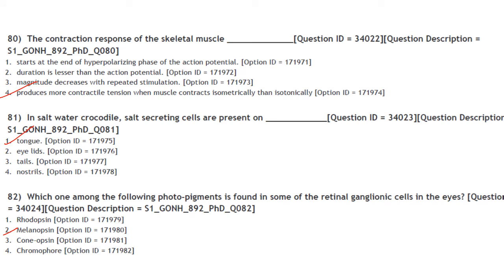Skeletal muscle produces more contractile tension when contracting isometrically than isotonically. In saltwater crocodiles, salt-secreting cells are present on the tongue. Answer is option 1. Which photopigment is found in some retinal ganglion cells? It is melanopsin. Answer is option 2.